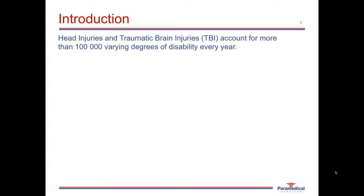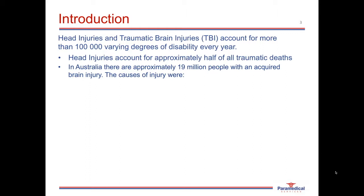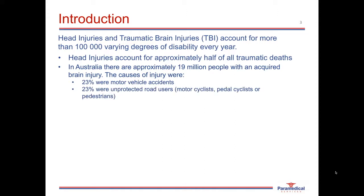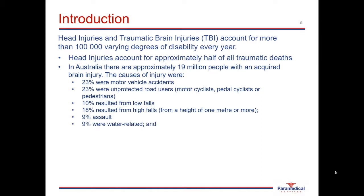Traumatic brain injuries account for more than 100,000 varying degrees of disability every year. Head injuries account for approximately half of all traumatic deaths, with chest and thoracic injuries second. In Australia there are approximately 19 million people with an acquired brain injury living today. Analyzing the causes: 23% were attributed to motor vehicle accidents, 23% to unprotected road users such as motorcyclists, cyclists or pedestrians, 10% to low falls under one metre, 18% to high falls above one metre, 9% to assault, 9% to water-related activities and sports, and 8% to other causes or unknown etiology.